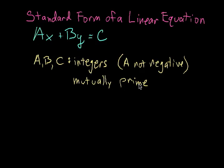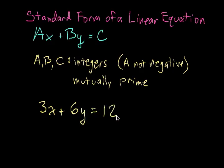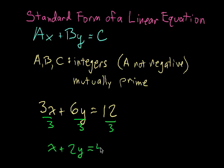They're also usually mutually prime, which means that in the simplest form of standard form, you don't have a GCF. In other words, if we had 3x plus 6y equals 12, this is not considered standard form because we can divide everything by 3. If we divide out the 3, we get x plus 2y equals 4, and this is considered standard form.